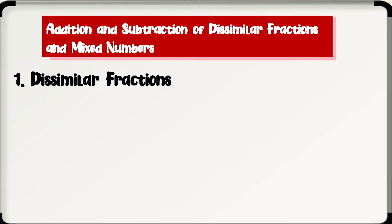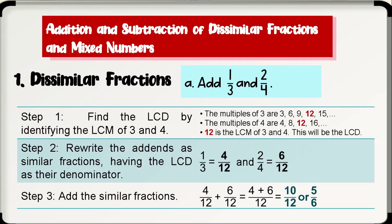For example, add 1 third and 2 over 4. Step 1: find the LCD by identifying the LCM of 3 and 4. The multiples of 3 are 3, 6, 9, 12, 15, and so on. The multiples of 4 are 4, 8, 12, 16, and so on. Therefore, 12 is the LCM of 3 and 4, and this will be the LCD.